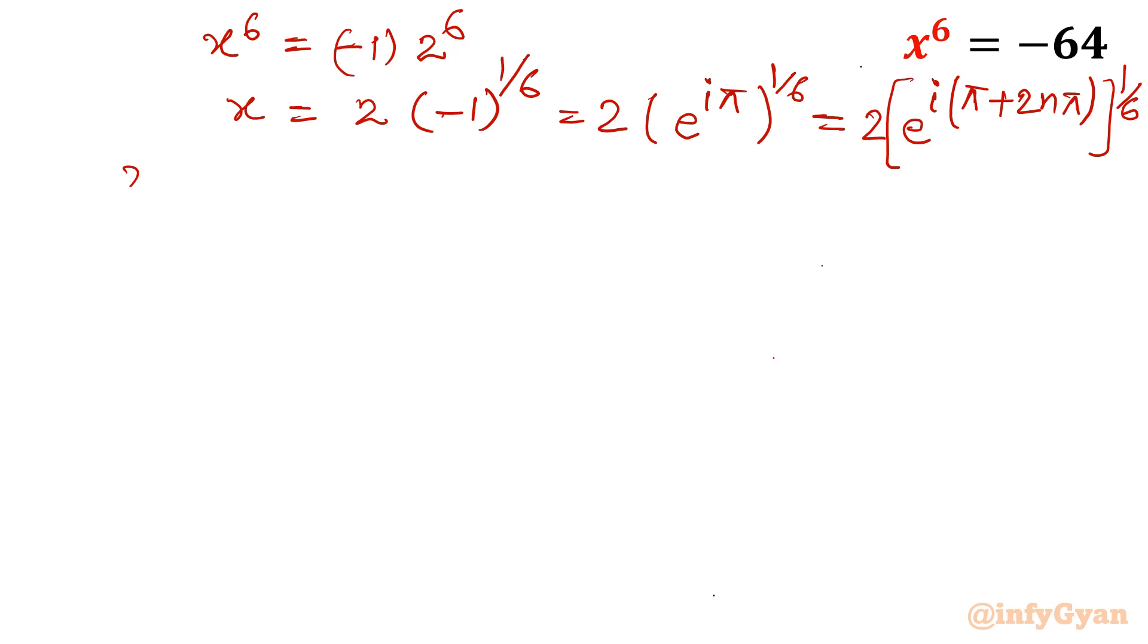Now using De Moivre's theorem we will write x = 2e^(i(π/6 + nπ/3)) where n belongs to integer and we are going to substitute 0, 1, 2, 3, 4, 5 for 6 roots. So by this method we will find out x₀, x₁, x₂, x₃, x₄, x₅. So let's find out all the 6 values.